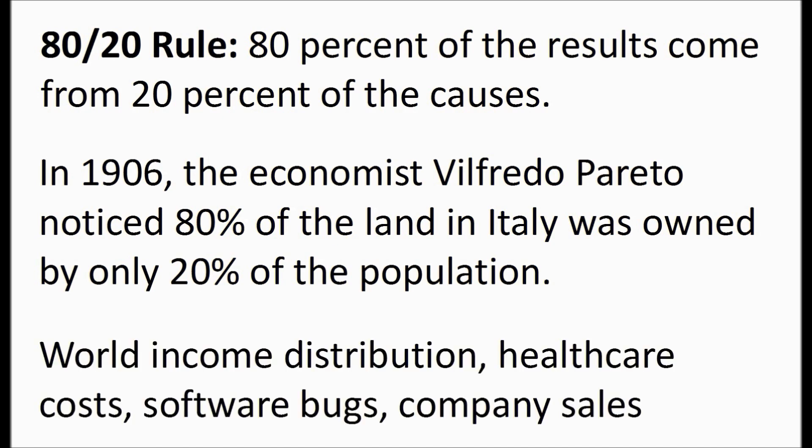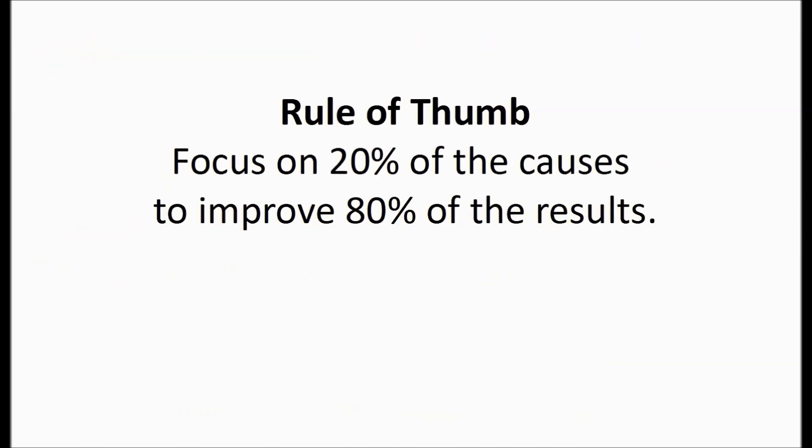The 80-20 rule has many examples. For instance, 80% of the world income comes from 20% of the richest people. The 80-20 rule is a good rule of thumb, so that you can focus on only 20% of the causes to improve 80% of the results.